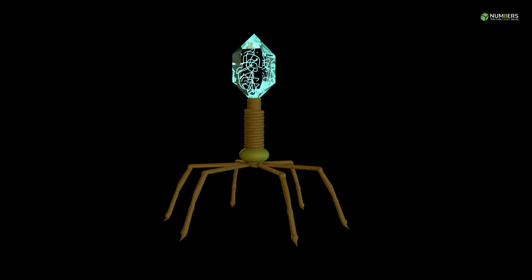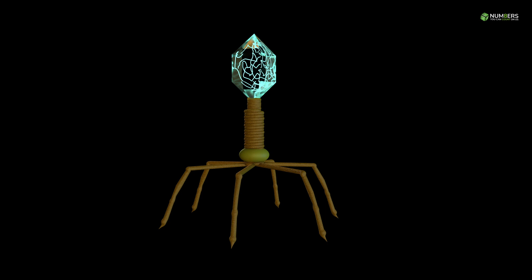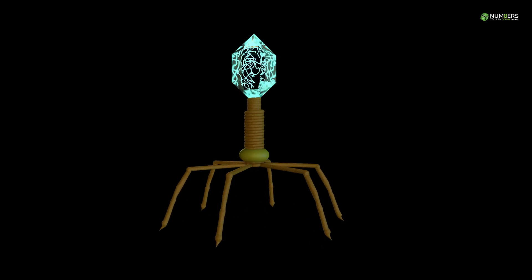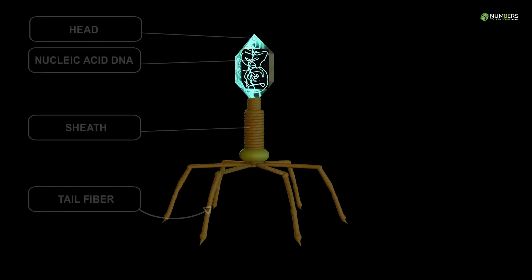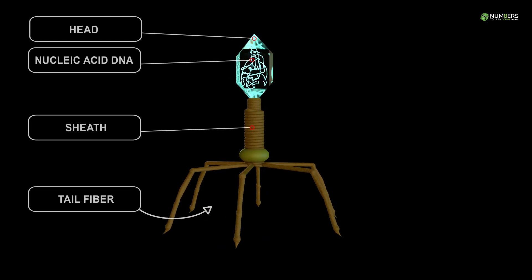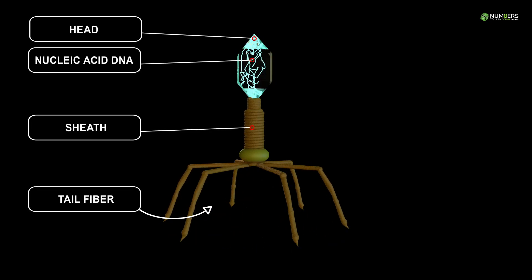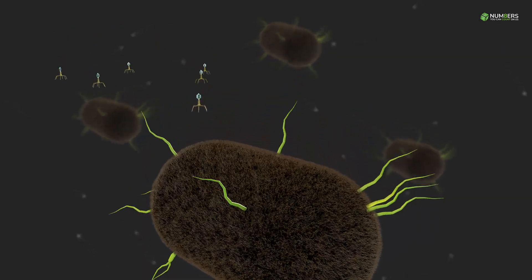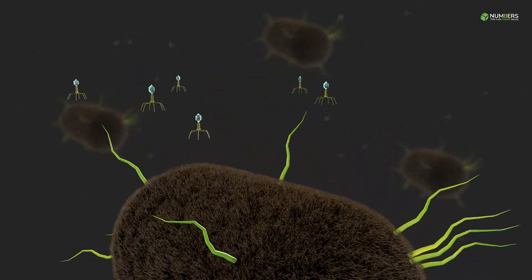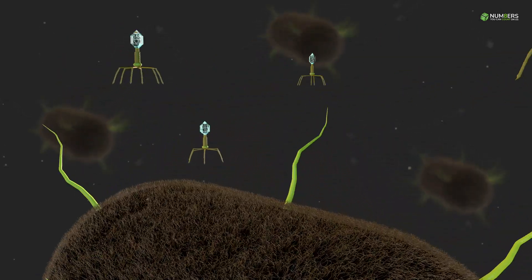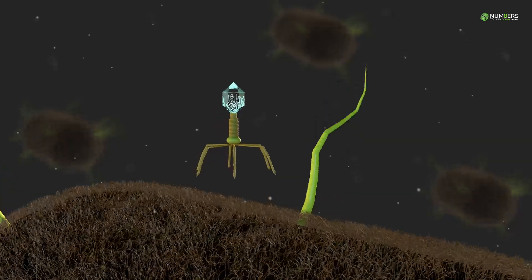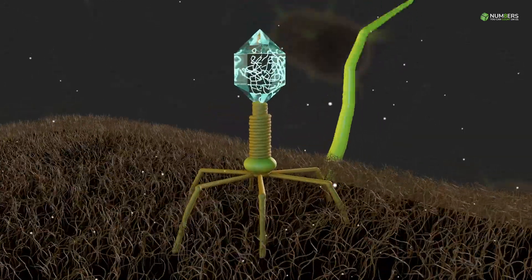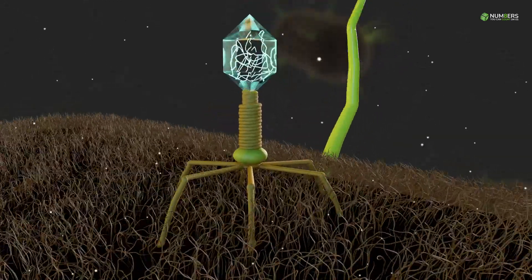Meet the bacteriophage, a virus that targets bacteria explicitly. As it encounters a bacterial cell, the bacteriophage's tail fibers lock onto the surface, ensuring a precise connection.